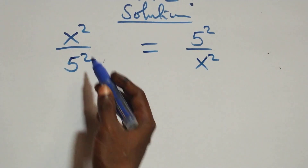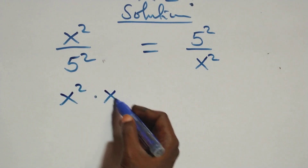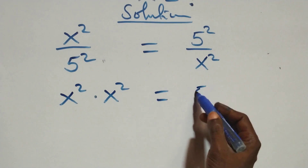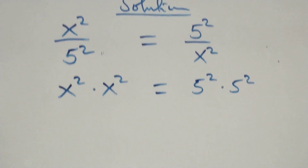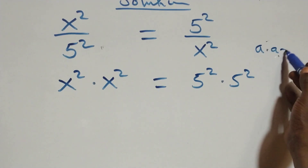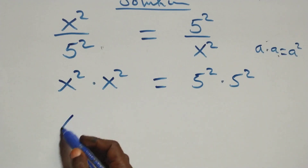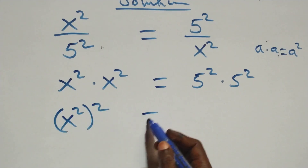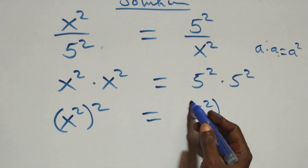The next step here, we cross multiply: x squared times x squared equals to 5 squared times 5 squared. This follows when we have a times a, which is the same thing as a squared. So we can write it as x squared squared equals to 5 squared squared.